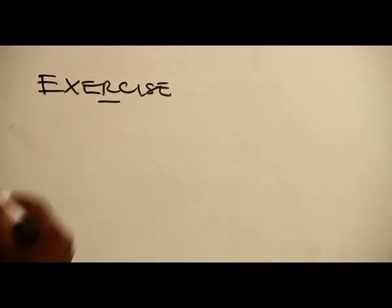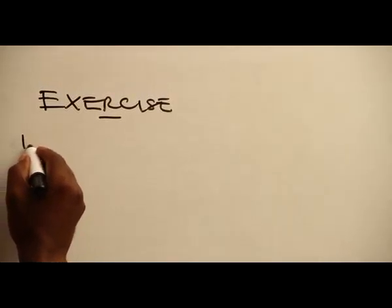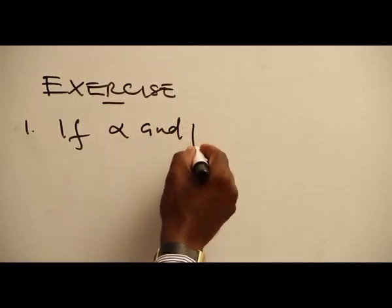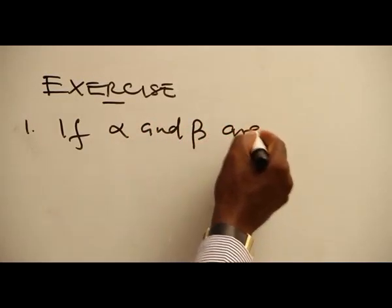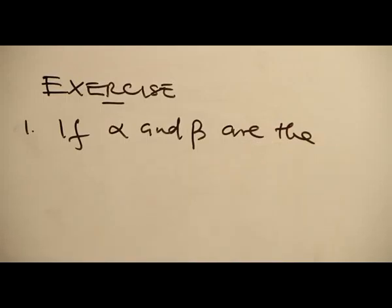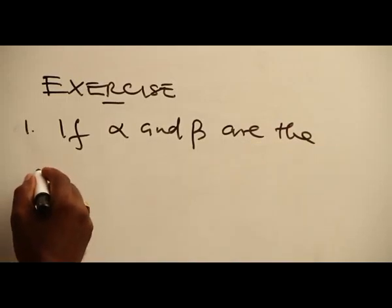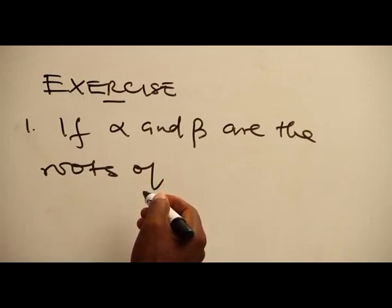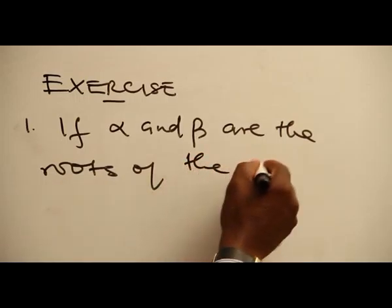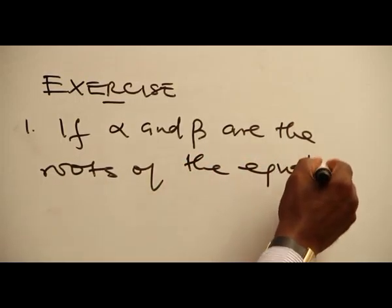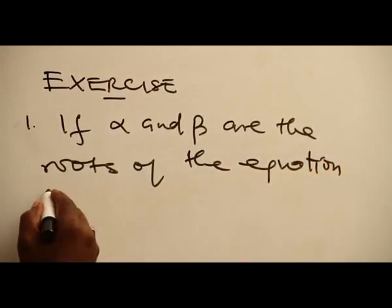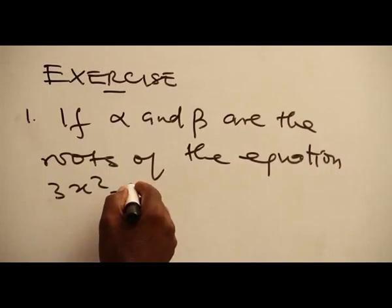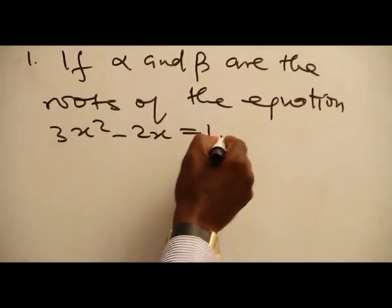This one says: if alpha and beta are the roots of the equation 3s squared minus 2s equal to 1.